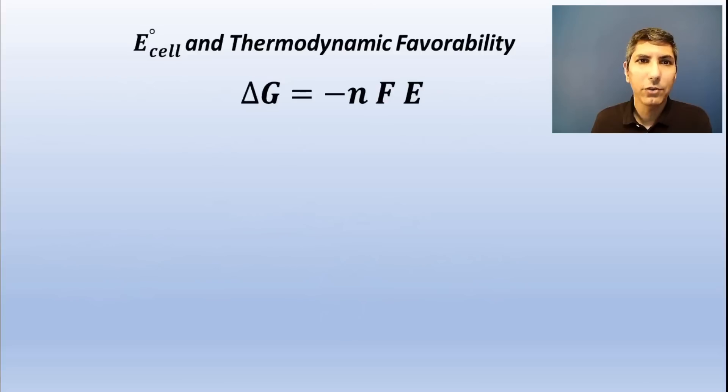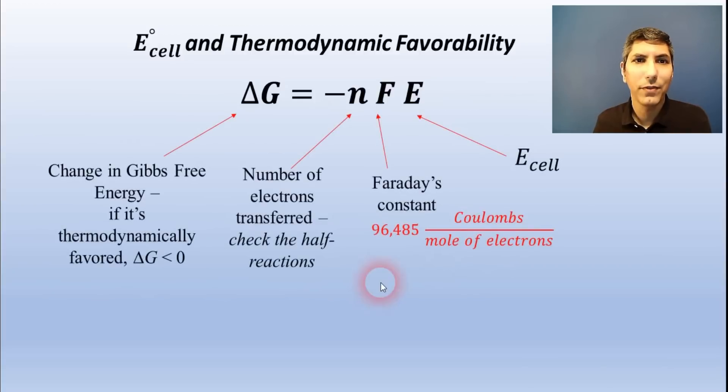The cell potential is related to the thermodynamic favorability of the cell by this equation. The delta G of the cell equals the opposite of the number of moles of electrons transferred in the balanced equation times Faraday's constant, which is 96,485 coulombs per mole of electrons, times the cell potential. We can determine the N by balancing the equation. So, if we know the delta G or the cell potential, we can calculate the other one.